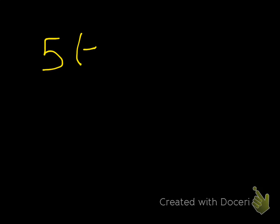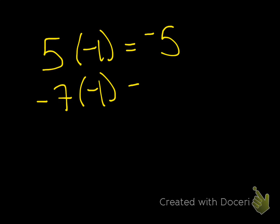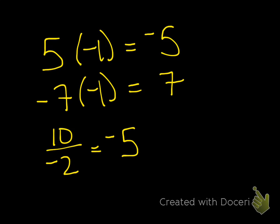Let's just do a couple. If I have the number 5 and multiply it by negative 1, it becomes negative 5. If I have negative 7 and multiply it by negative 1, then I have positive 7. Same thing with division: 10 divided by negative 2 gives negative 5, and negative 12 divided by negative 4 gives 3.